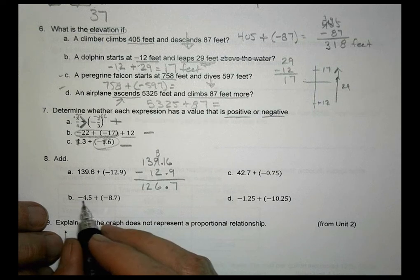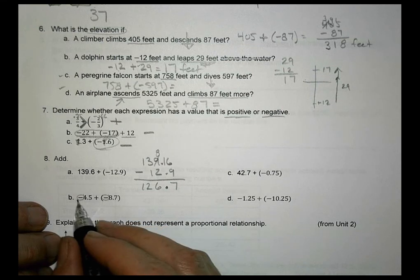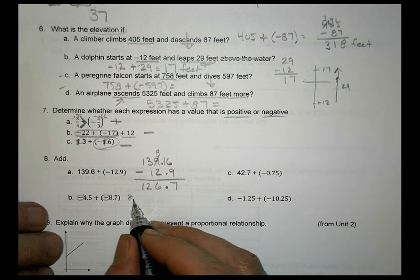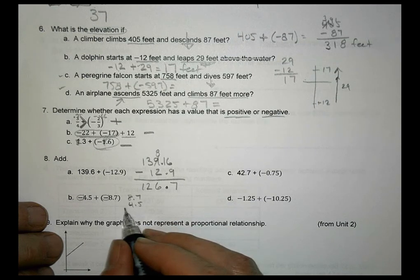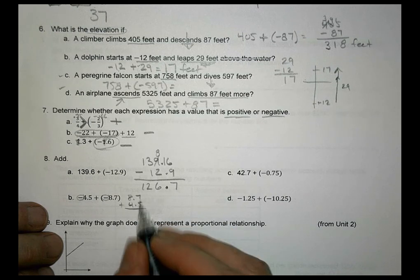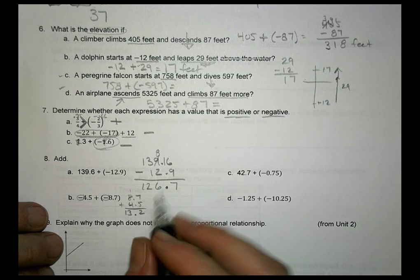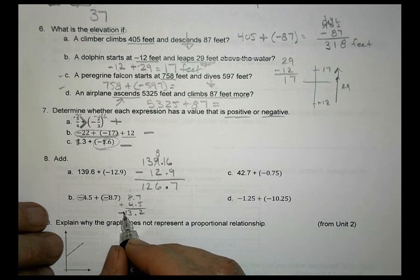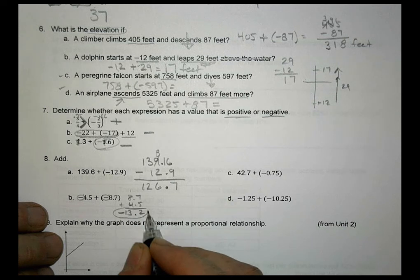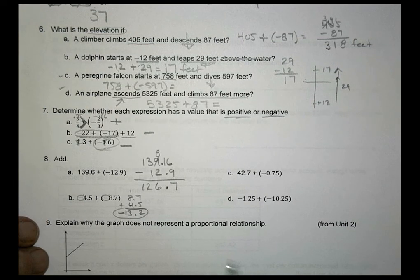For part B, we see we have the two signs are the same. So since the signs are the same, we're going to go ahead and find the sum. 8.7 and 4.5. We're going to add those up. We have 12, carry the 1. And a decimal and a 13. And because the signs are the same, we find the sum. We keep the sign the same. So negative 13.2 is what we have for a solution there.